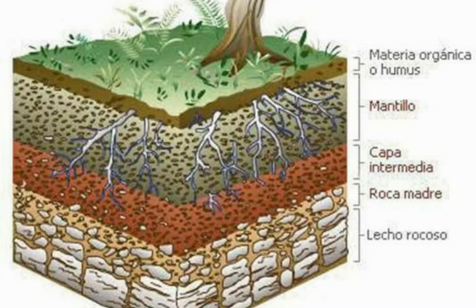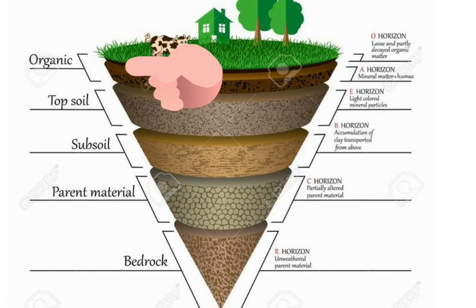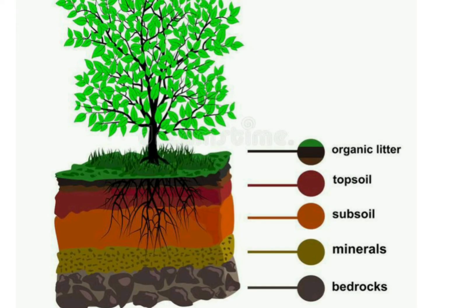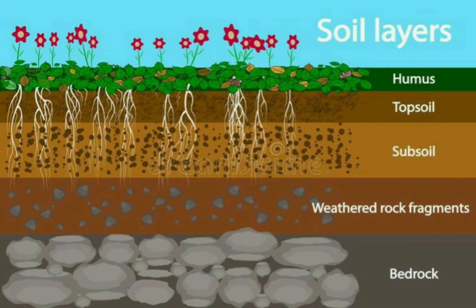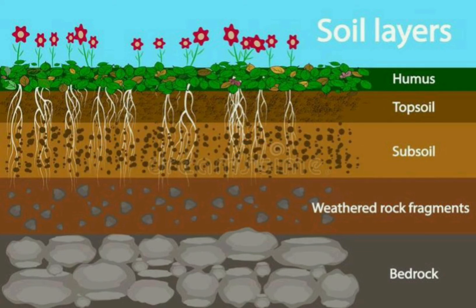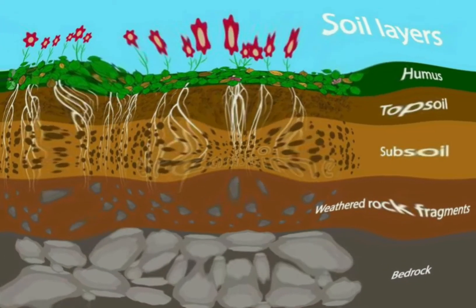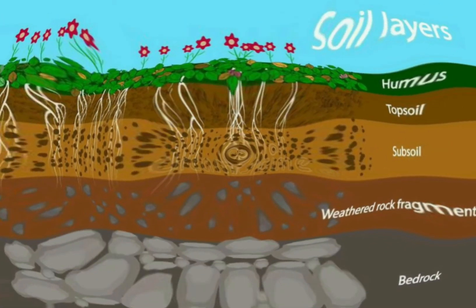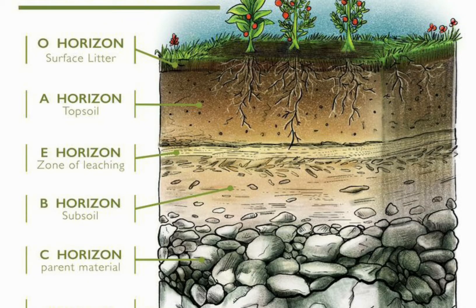What do we mean by soil profile? Generally when we see the soil, we see only the surface. But if we dig a hole in the ground — as we usually do during the laying of the foundation of a building — we see that the color of the soil changes as we go deeper, and even the size of the rock pieces changes. Such a view of the soil is called a soil profile. A soil profile is defined as the vertical section of the soil that grows in different layers. Each layer differs in texture, color, depth, and chemical composition, and these layers are referred to as horizons of the soil.